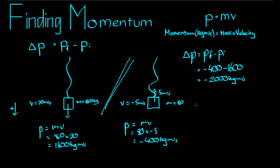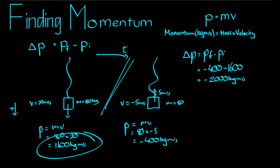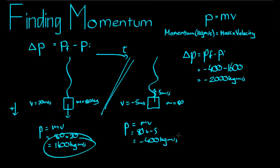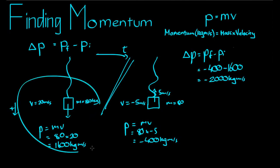If you said the change in momentum was just positive two thousand kilograms times metres per second, you'd be wrong. The change in momentum is supposed to tell you by how much it increases as you go forward in time. If the change were positive two thousand, that would imply momentum goes from sixteen hundred up to three thousand six hundred. But what we want to say is the change is negative two thousand, because it goes from sixteen hundred to negative four hundred. Always make sure the sign of delta p reflects the direction convention you set up.